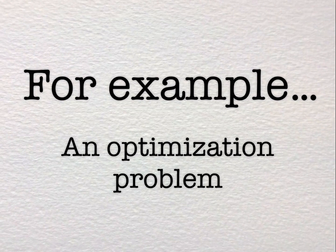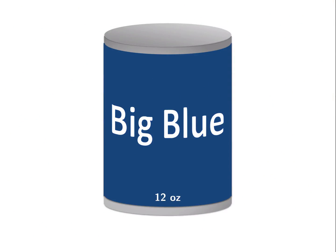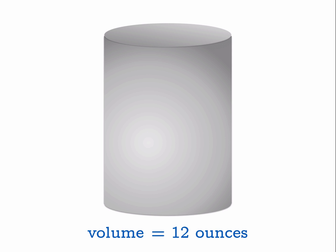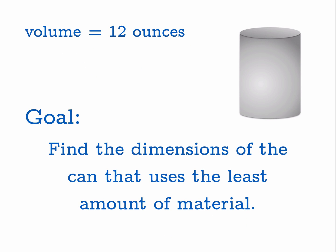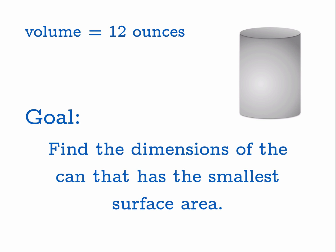Let's take a look at an example of an optimization problem. Suppose we want to go into the soda business, so we're going to sell 12 ounce cans of soda. Our goal is to find the dimensions of the can that uses the least amount of material to build. Put another way, we want to find the dimensions of the can that has the smallest surface area possible.